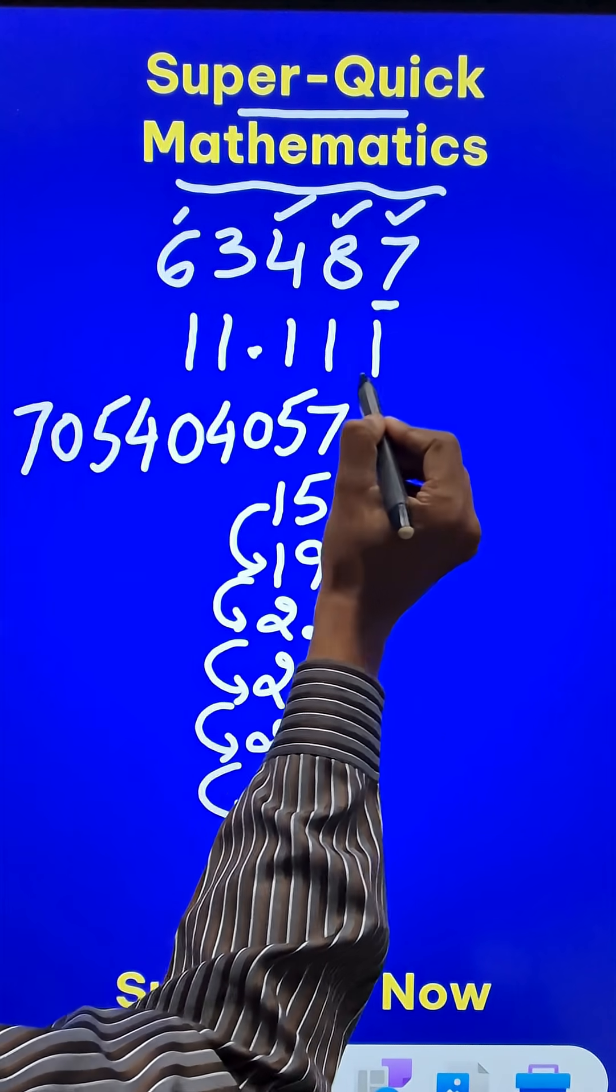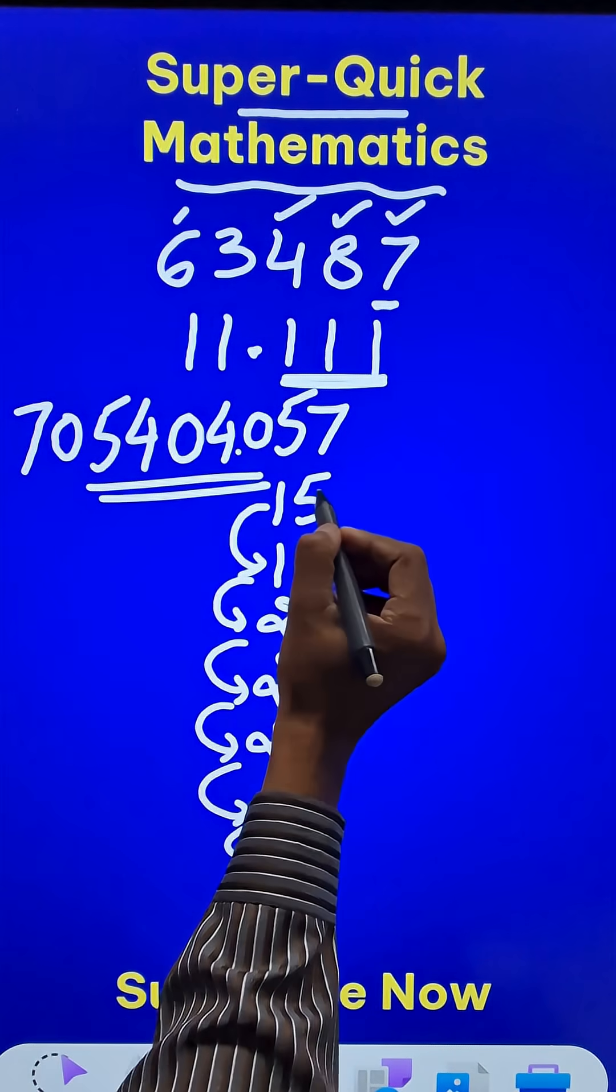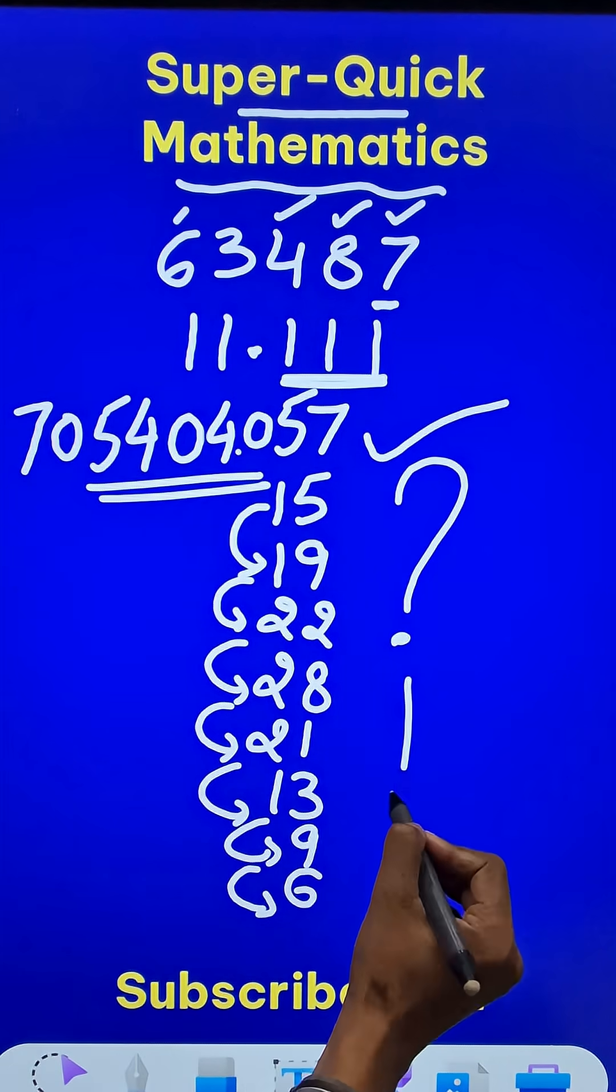So how many digits are there after decimals? 3 digits. Now put a decimal here and check your answer using the calculator. Is it the correct answer? Let me know in the comment box below.